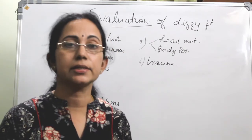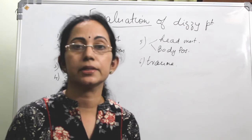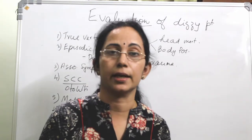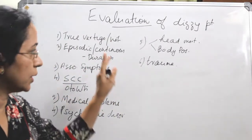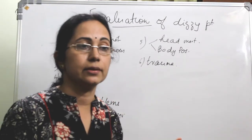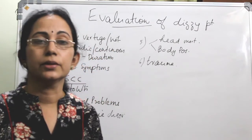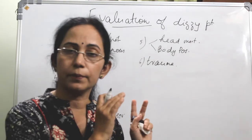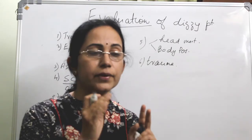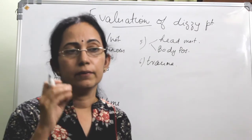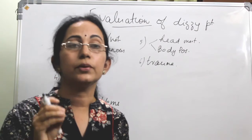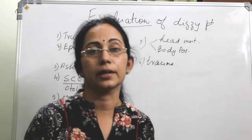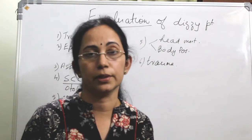Under the medication history, specifically ask for hypertension, diabetes mellitus, and anxiety disorders or any psychiatric problems. So all these questions — the treating surgeon or the examiner should be able to answer all of them. After a very good history taking, we will be able to come to a provisional diagnosis. That is the importance of history taking in a case of giddiness or vertigo.